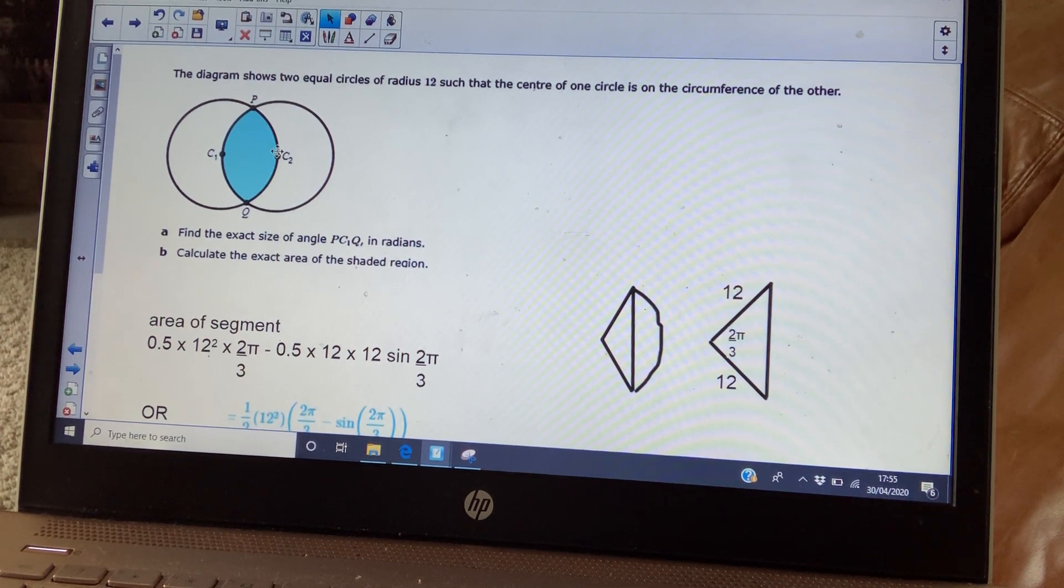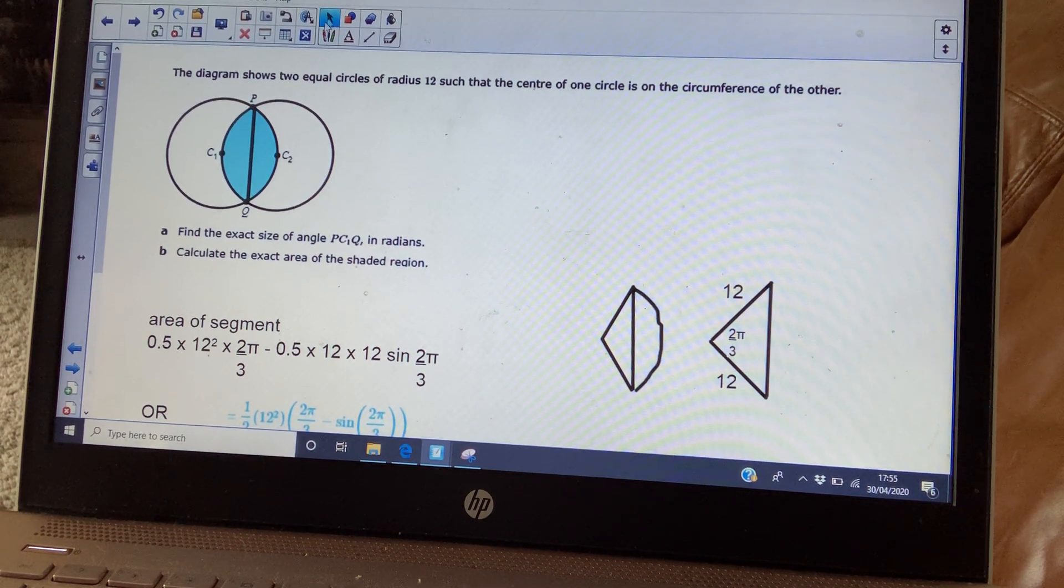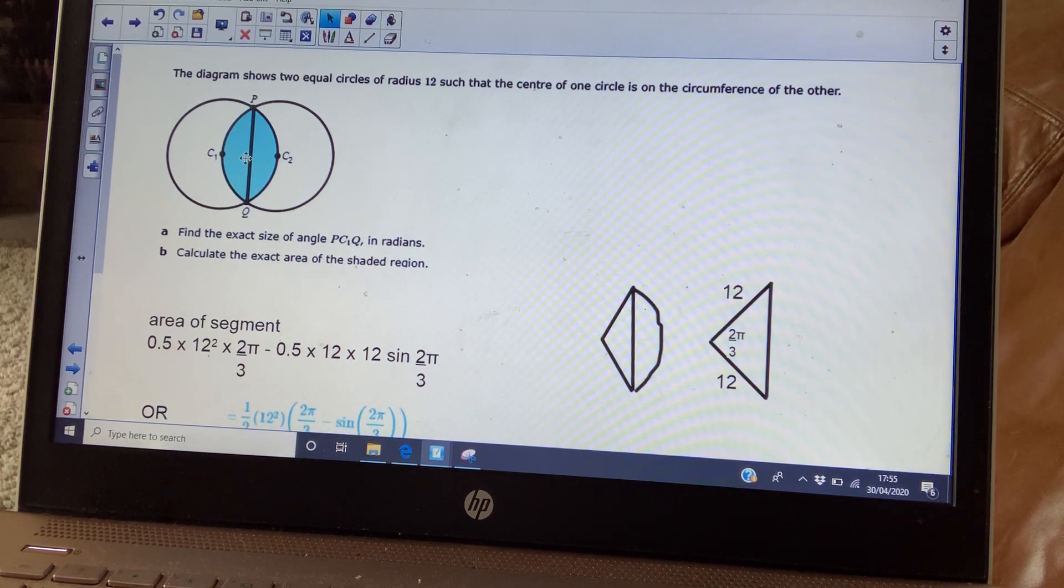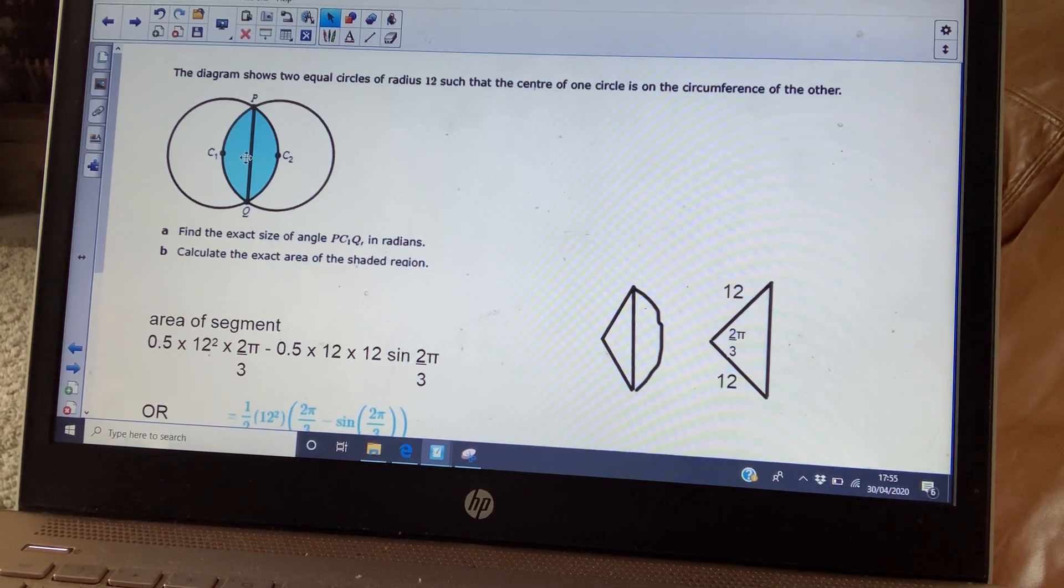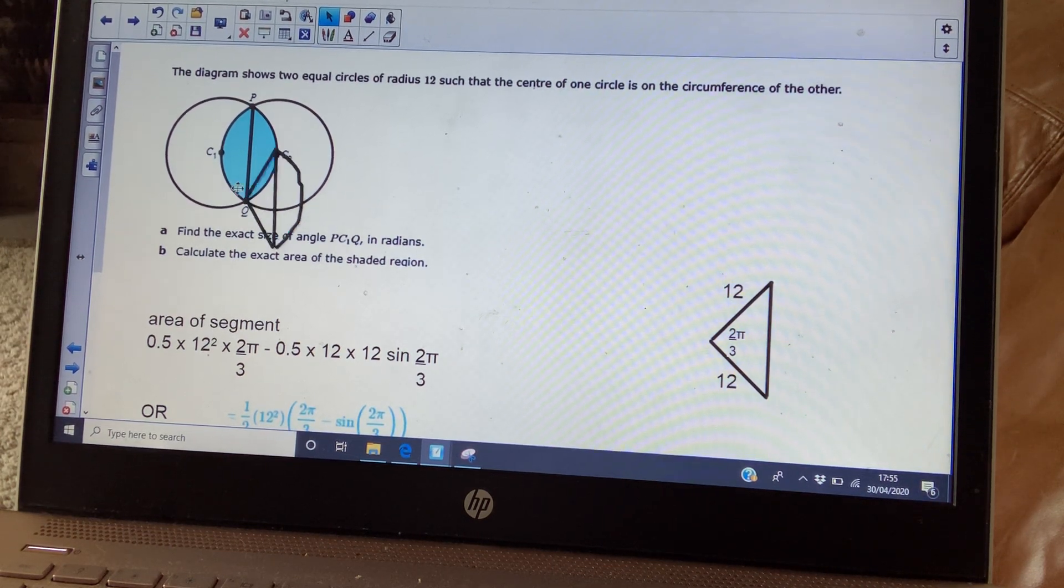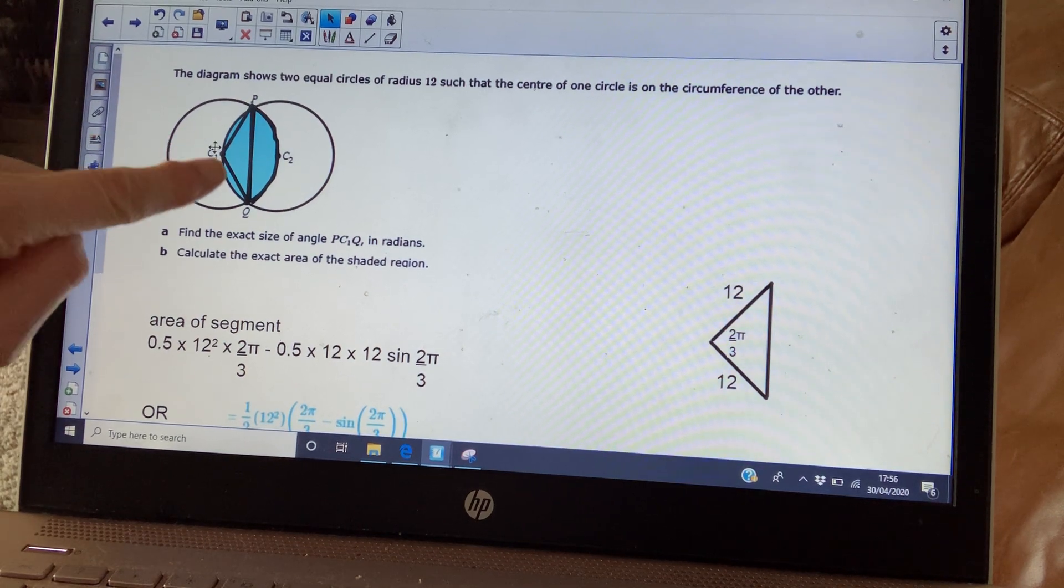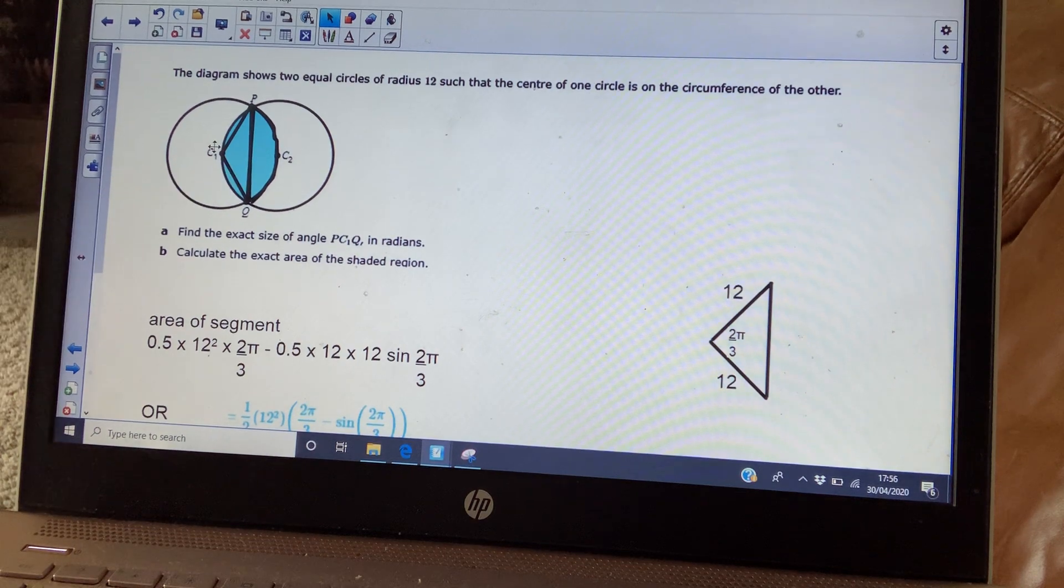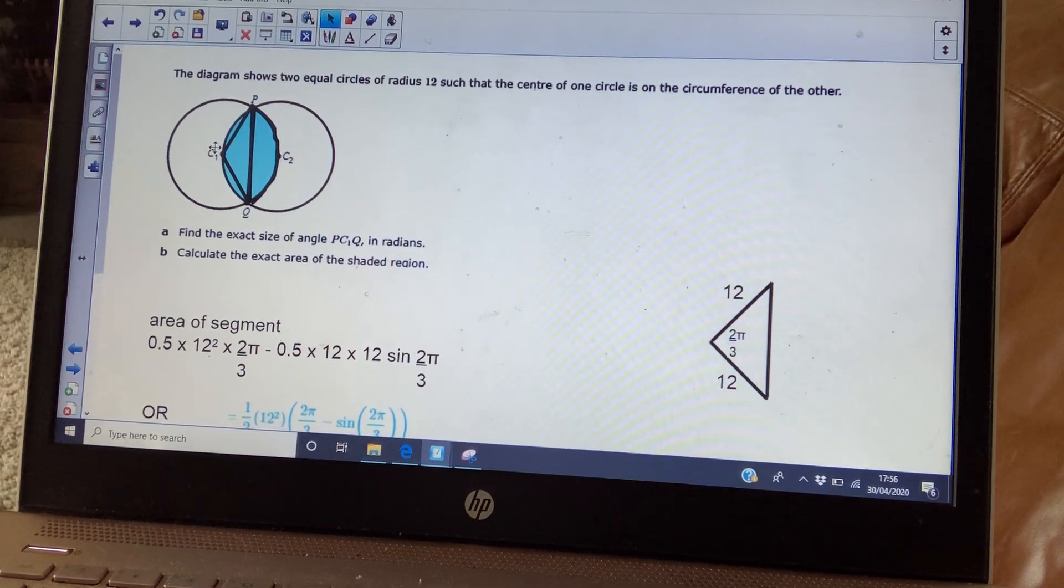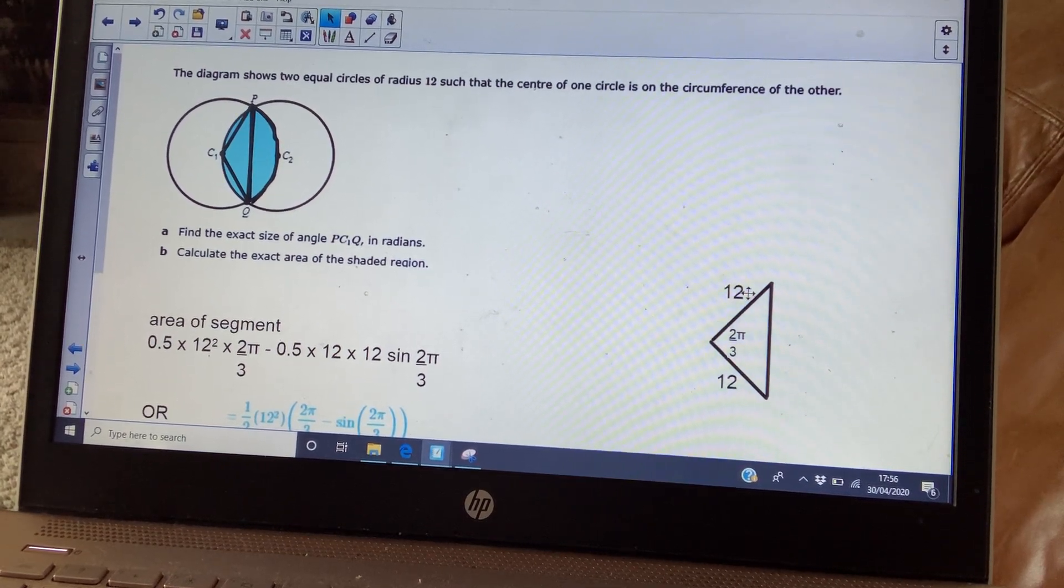Part B, find the exact area of the shaded region. So the first thing we're going to think of is if you split that into two, you should have two identical segments. So what the question is really asking you to do is work out the area of one of those segments and then double it. Now, you know that the way to work out the area of a segment is from the area of a sector, unless you've learned that formula that we were just talking about. So what I've done is I've now drawn in the sector so that you can work out the area of the segment without having to learn the formula.